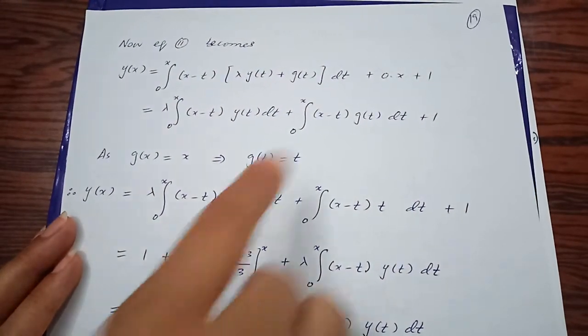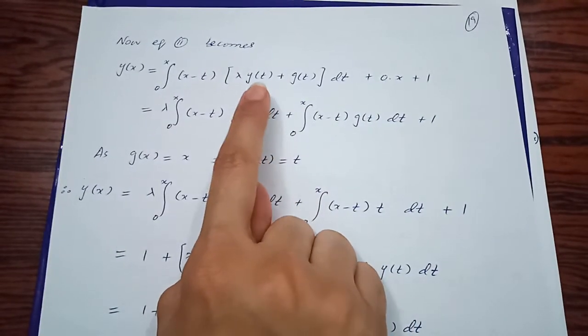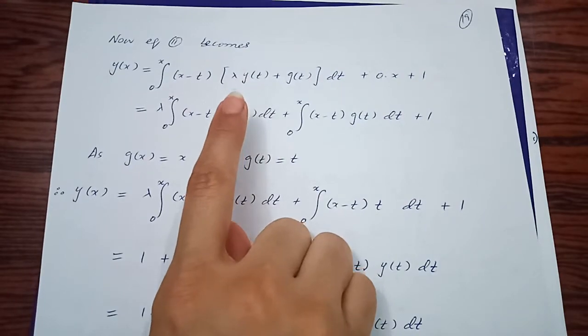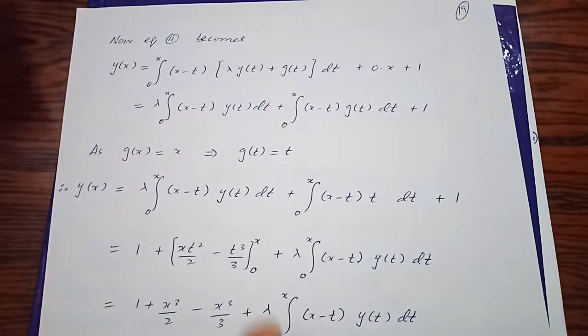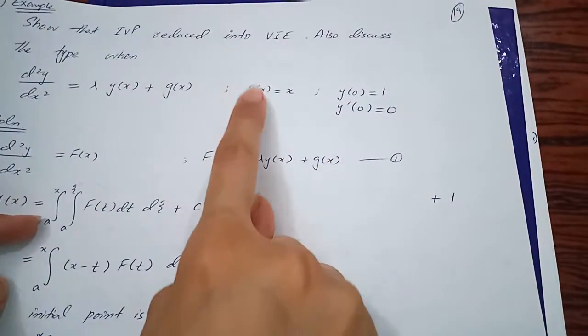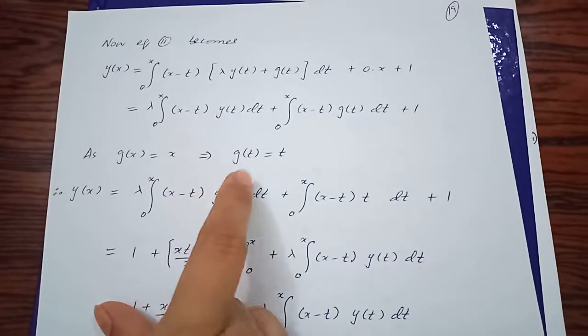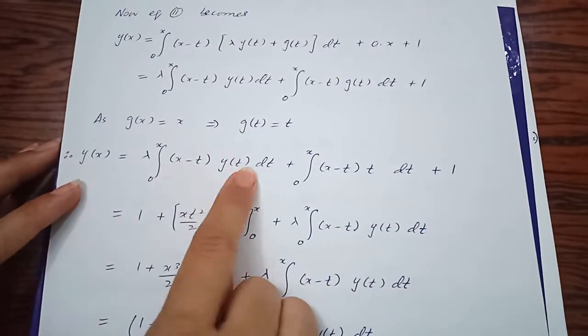When you plug in c₁ and c₂, you get this. Now your f(t) was λy(t) + g(t). Since g(x) = x, g(t) = t. Replace the values and then integrate.